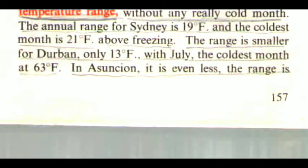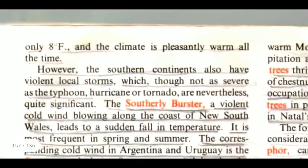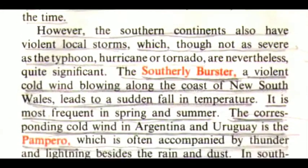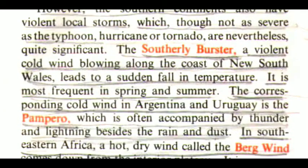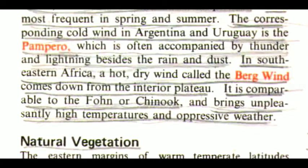The range is smaller for Durban — only 13°F, with July the coldest month at 63°F. In Asuncion it is even less; the range is only 8°F and the climate is pleasantly warm all the time. However, the southern continents also have violent local storms. The southerly burst, a violent cold wind blowing along the coast of New South Wales, leads to a sudden fall in temperature and is most frequent in spring and summer. The corresponding cold wind in Argentina and Uruguay is the Pampero, often accompanied by thunder and lightning, rain and dust. In southeastern Africa, a hot dry wind called the Berg Wind comes down from the interior plateau, comparable to the Foehn and Chinook, bringing unpleasantly high temperatures and oppressive weather.